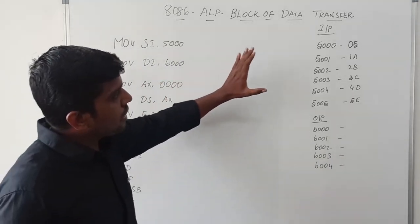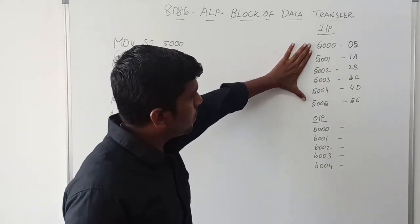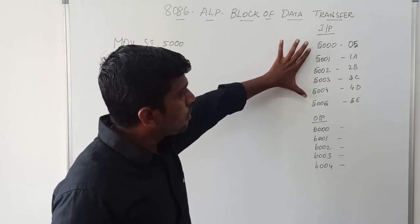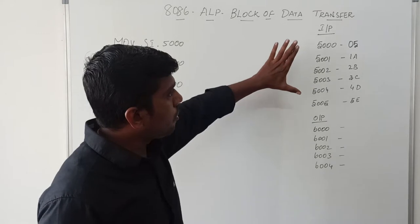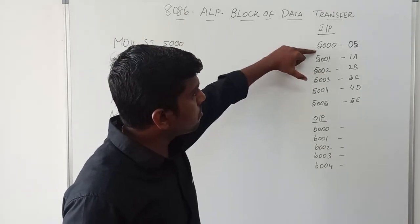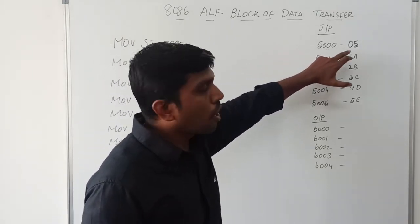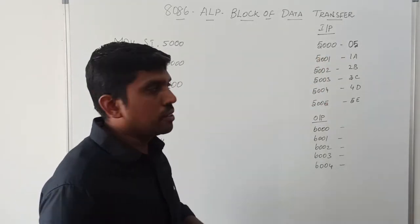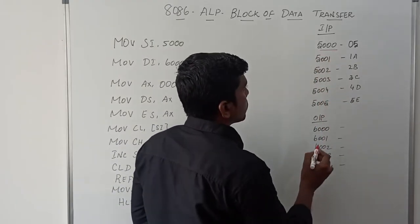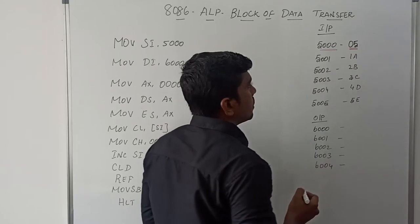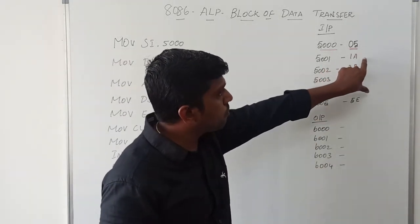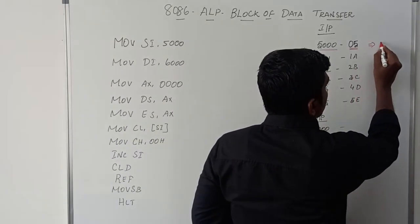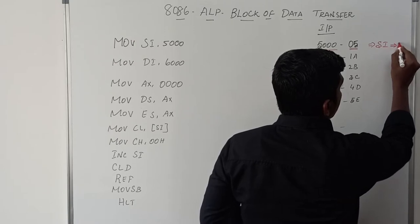Before I start my explanation, first I initialize the input memory location and output memory location. In this program I am taking six memory locations for storing six data. The first memory location 5000H holds the data 05, which represents how many data values are transferred from source index to destination index. So 5 data values are transferred from source to destination.